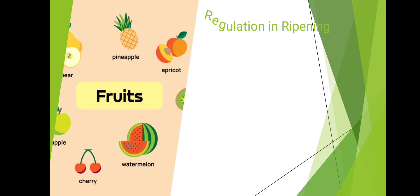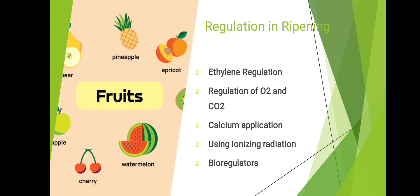Regulation in ripening includes: ethylene regulation, regulation of O₂ and CO₂, calcium application, use of ionizing radiation, and bioregulators.